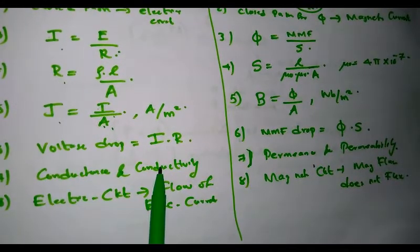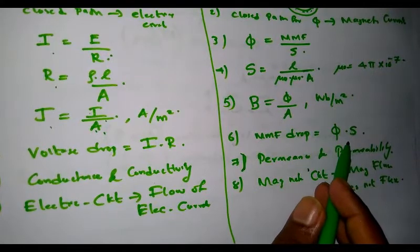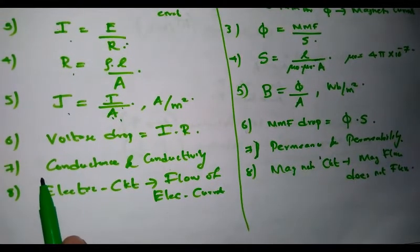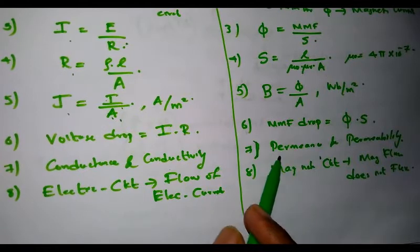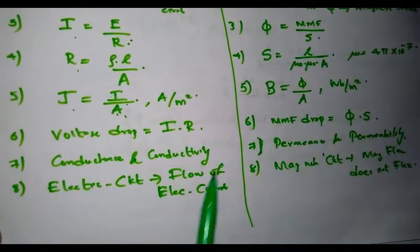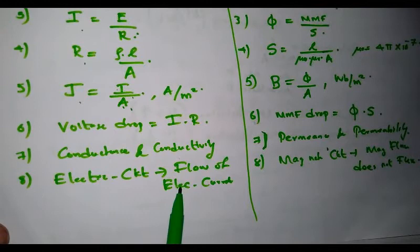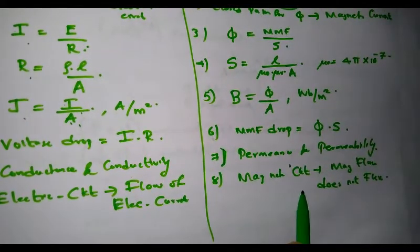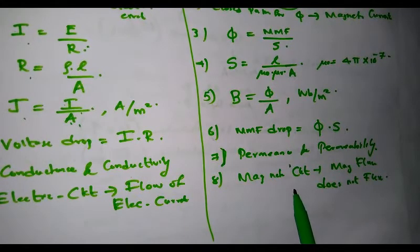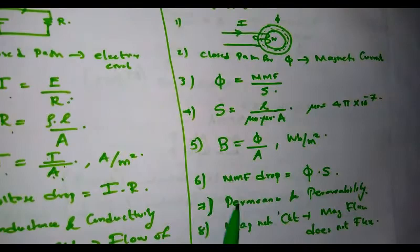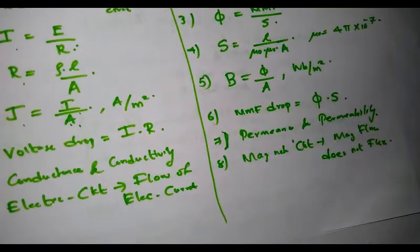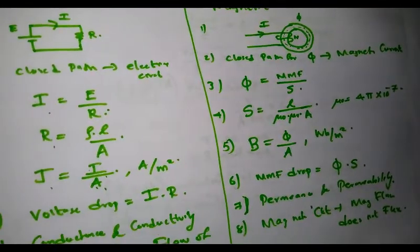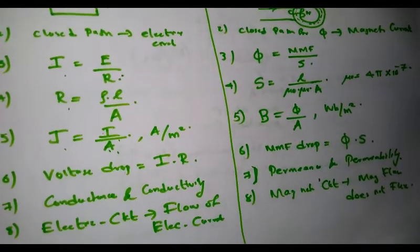Voltage drop equals I times R, whereas MMF drop equals phi times S. In electric circuits, you have conductance and conductivity; in magnetic circuits, you have permeance and permeability. In an electric circuit, electric current flows — electrons move from positive to negative terminal of the battery. Whereas in a magnetic circuit, as a result of the MMF, which is the product of number of turns and current through the coil, magnetic flux is set up across the circuit. These are the basic comparisons between an electric circuit and a magnetic circuit.